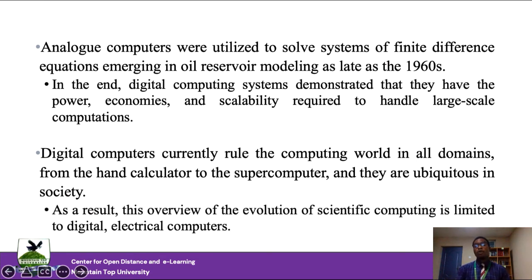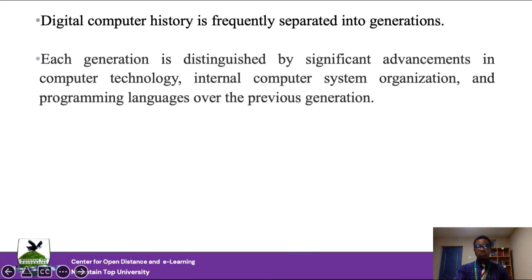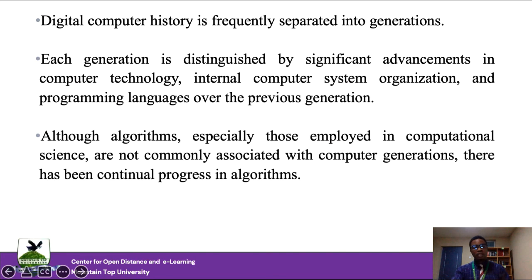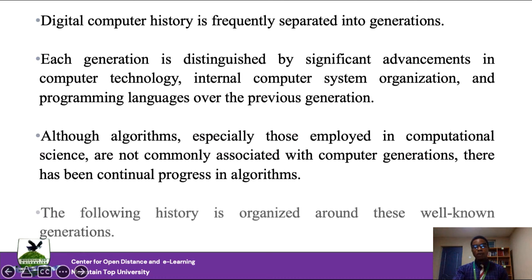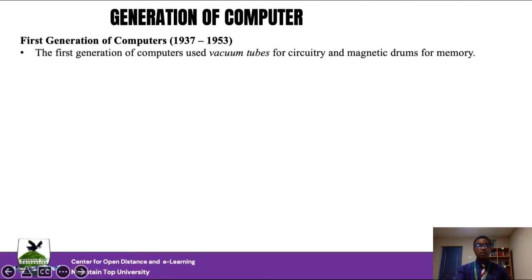Digital computer history is frequently separated into generations, considering the type of computer technology used, the materials for processing information, internal computer system organization, and programming languages. The first generation of computers existed between 1937 and 1953 and made use of technologies such as vacuum tubes and magnetic drums to store and process information. However, they were too big, too slow, and too expensive, as the materials used limited computational speed.